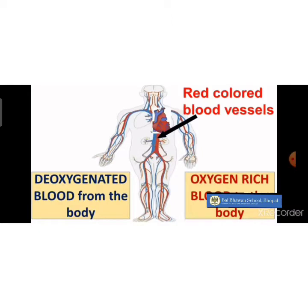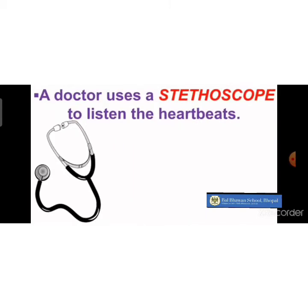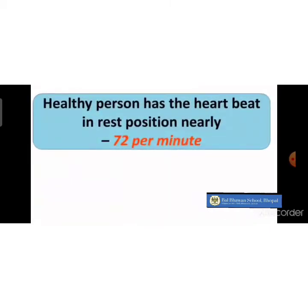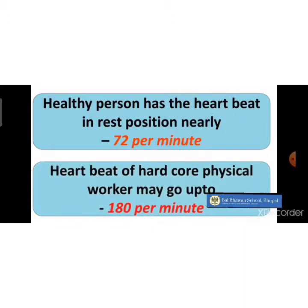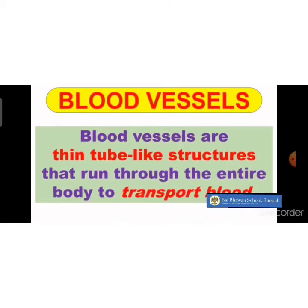There are red color blood vessels and blue color blood vessels. The red color blood vessels carry oxygen-rich blood and the blue color blood vessels carry de-oxygenated blood. A doctor uses a stethoscope to listen to your heartbeat. A normal person's heart beats 72 times per minute at rest, and it can be 180 per minute for an athlete.